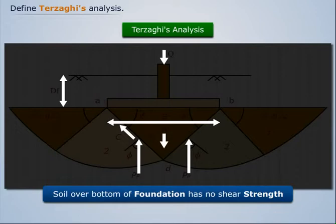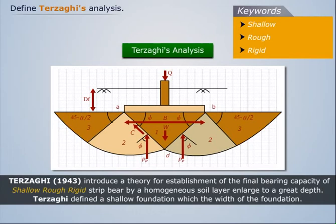Terzaghi 1943 introduced a theory for establishment of the final bearing capacity of shallow, rough, rigid strip bear by homogeneous soil layer enlarged to a great depth. Terzaghi defined a shallow foundation as one where the width of the foundation is the critical dimension.